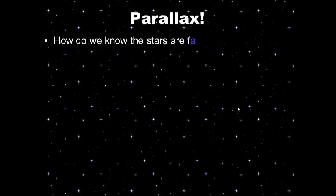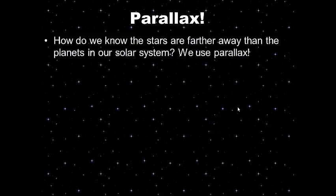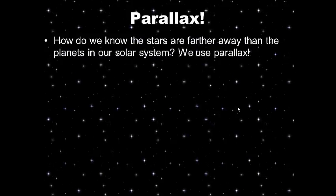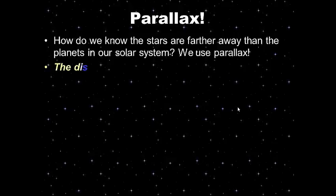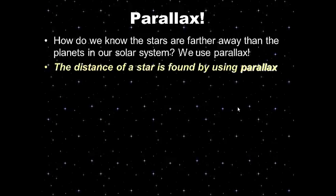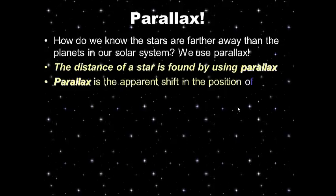Parallax — how do we know the stars are farther away than the planets in our solar system? The answer is we use something called parallax. It's a mathematical way we calculate the distance of stars. The distance of a star is found by using parallax — we'll be doing a parallax lab coming up soon.